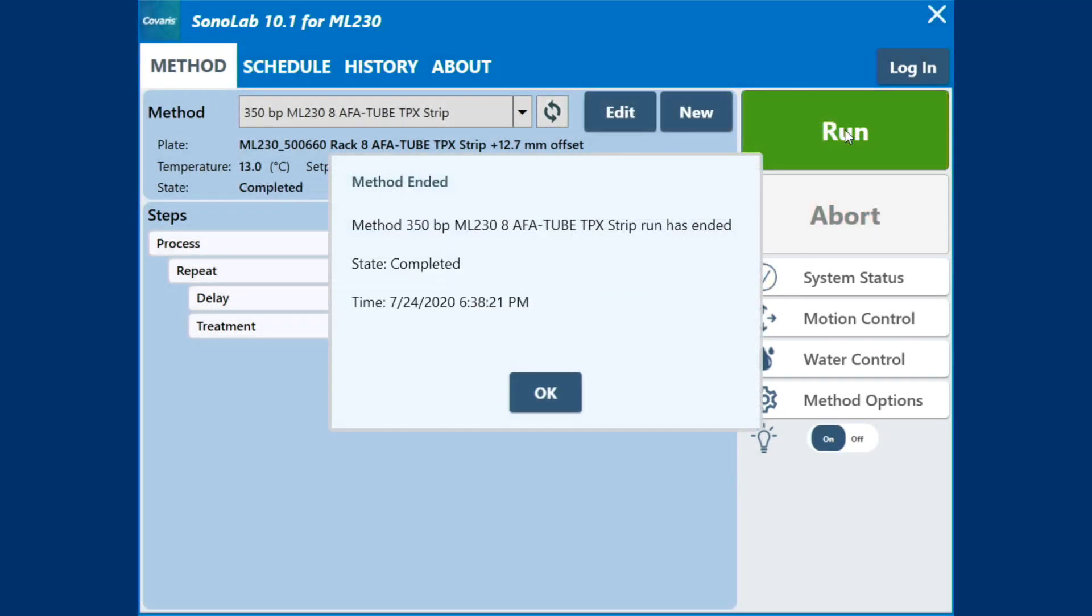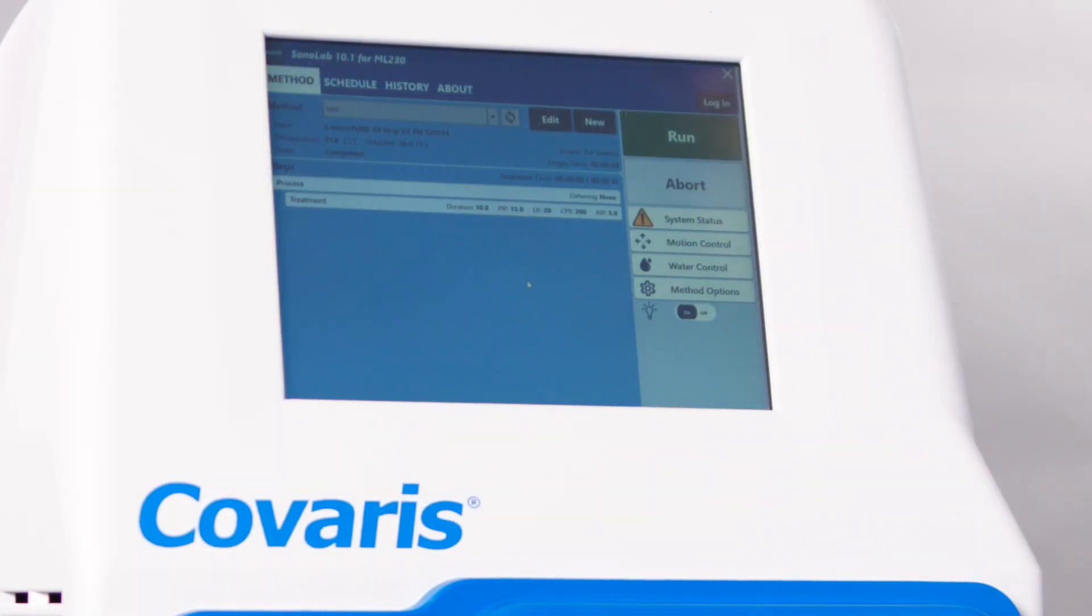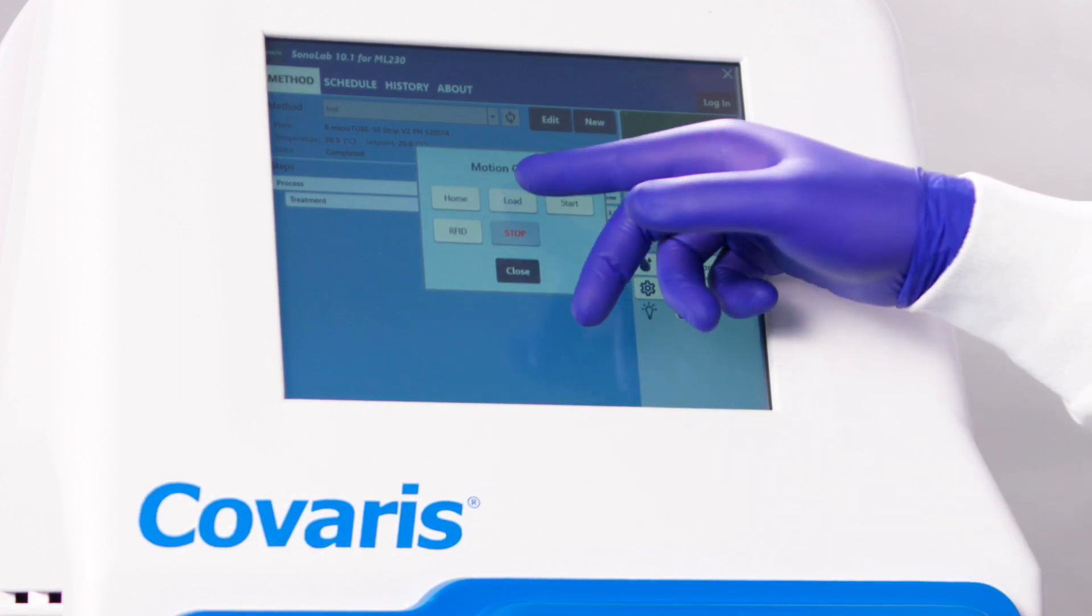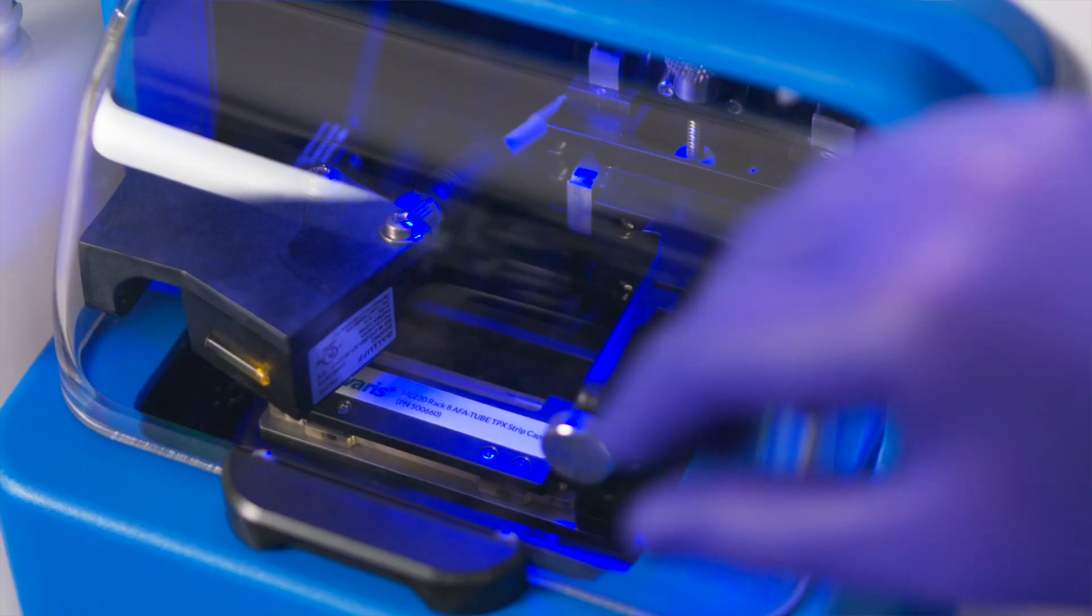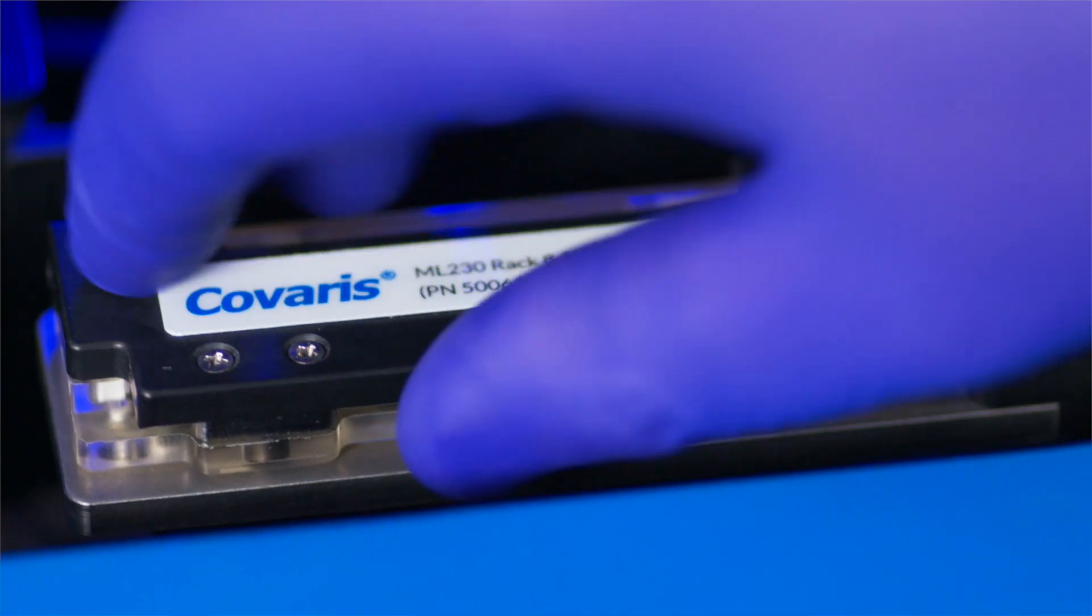When the method has finished, the message Method Ended is displayed. Touch OK, then touch the Motion Control button, followed by the Load button from the Motion menu to raise the sample tray out of the water bath. When the sample tray stops moving, raise the safety cover and remove the treated sample rack.